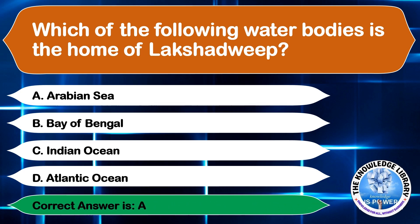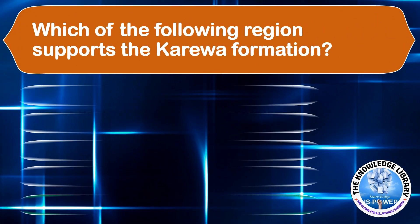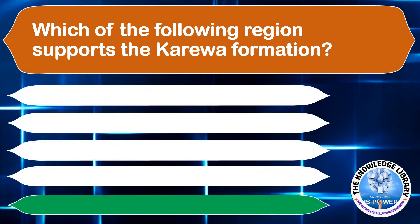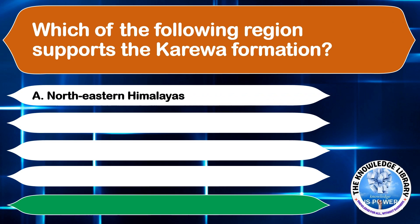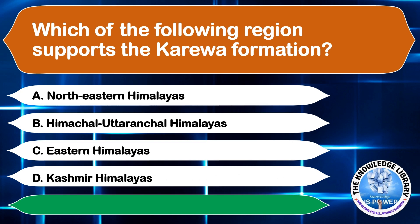Which of the following regions supports the Karewa formation? A. Northeastern Himalayas, B. Himachal-Uttaranchal Himalayas, C. Eastern Himalayas, or D. Kashmir Himalayas. The correct answer is option D, Kashmir Himalayas.